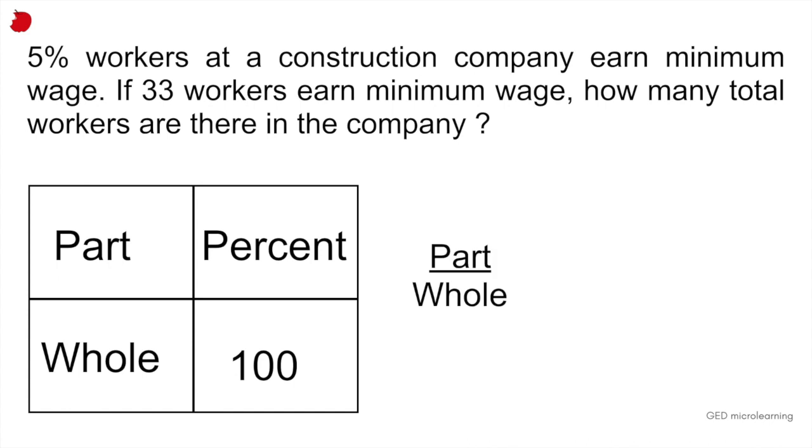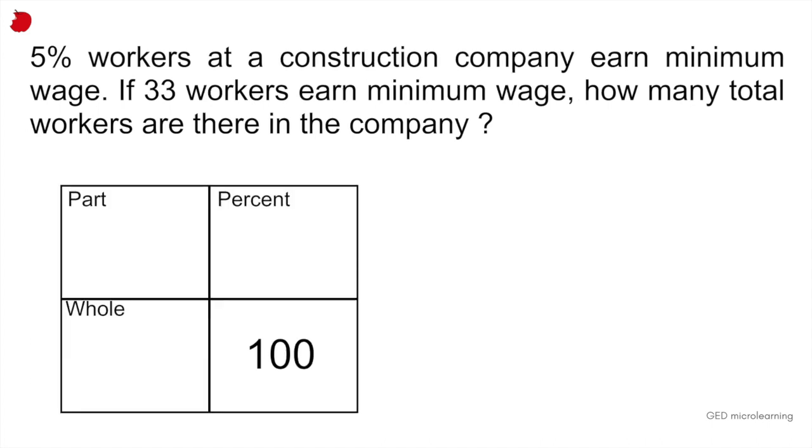Also because this whole box is going to represent an equation. It represents the part divided by the whole is equal to percent over 100. If you have three of those numbers, you can set up your equation to find the missing number. So let's go ahead and do this in this problem.